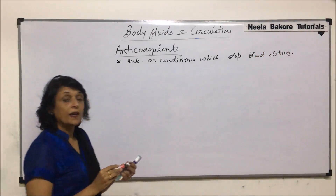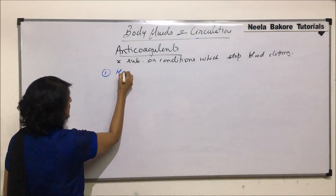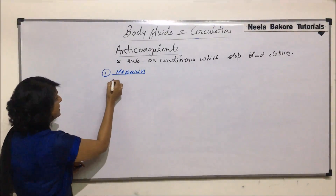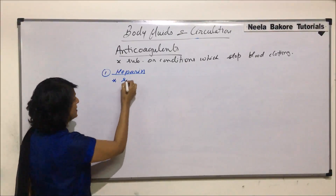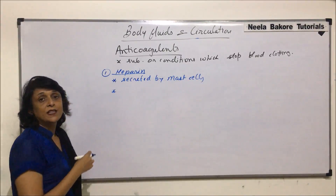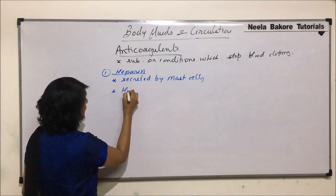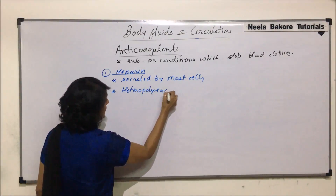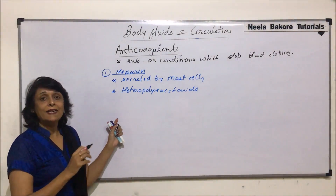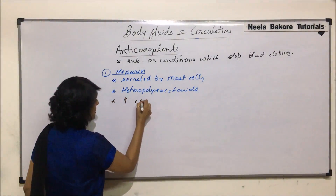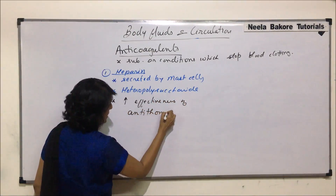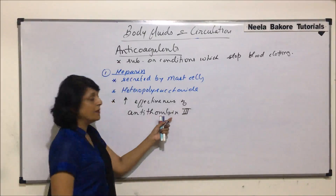The first substance found in our blood is heparin, which is our natural anticoagulant. It is synthesized and secreted by mast cells. Its chemical nature is that it is a heteropolysaccharide. It works by increasing the effectiveness of a substance called antithrombin, specifically antithrombin 3.